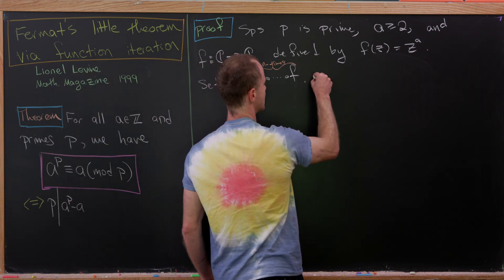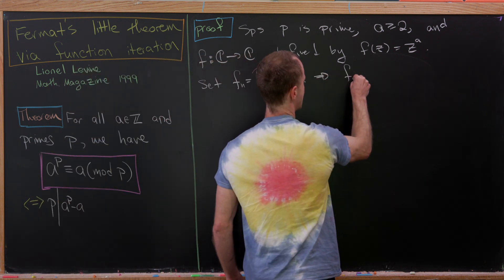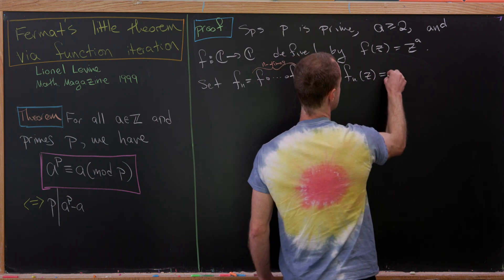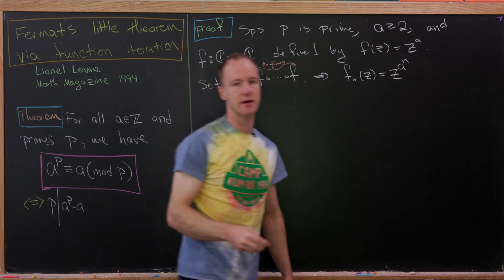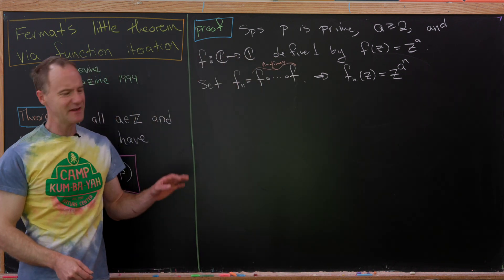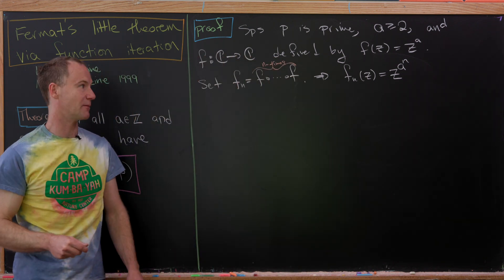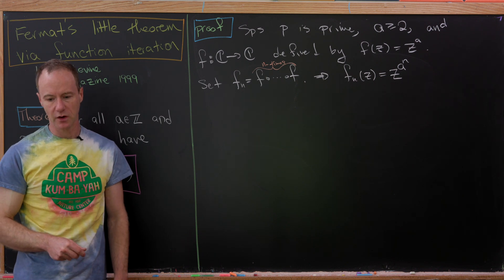Okay, so let's notice that that implies that F sub N of Z is in fact equal to Z to the A to the n power. So I think that's pretty easy to check by induction. Okay, great.